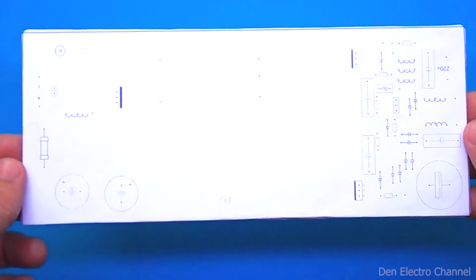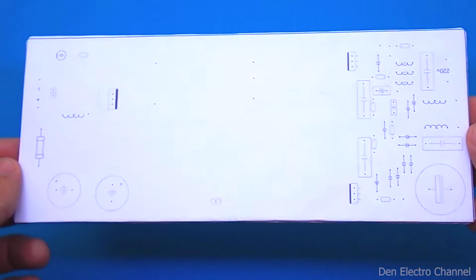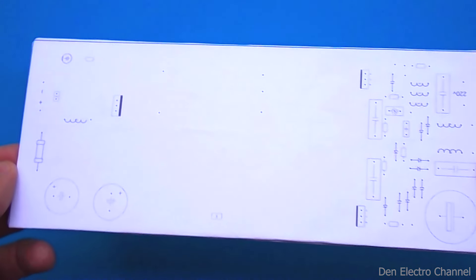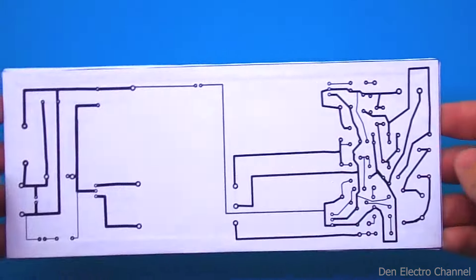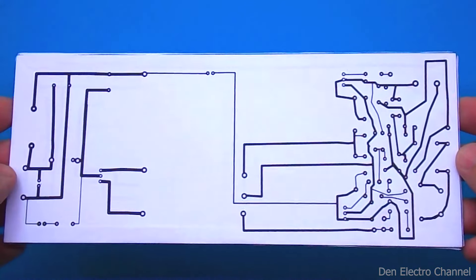For my power supply, I will make a board using laser cardboard technology. To do this, I take thick cardboard. On one side, I glue paper with tracks connecting all the parts.